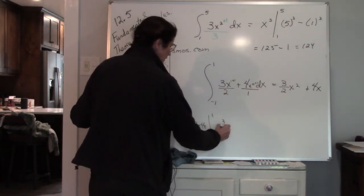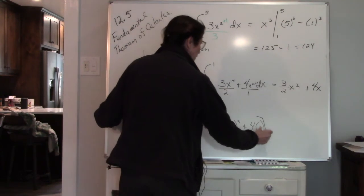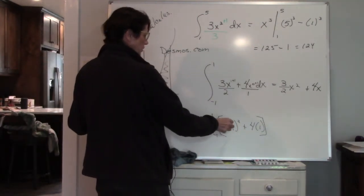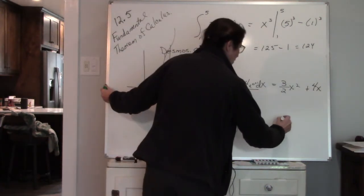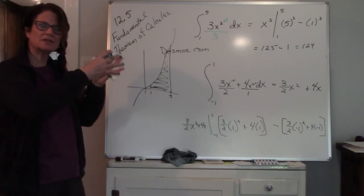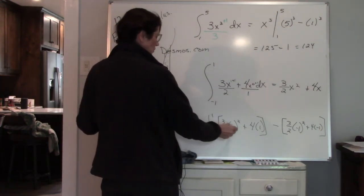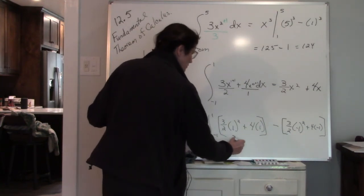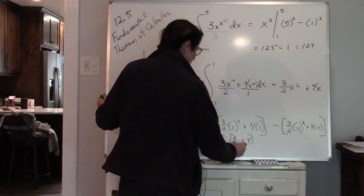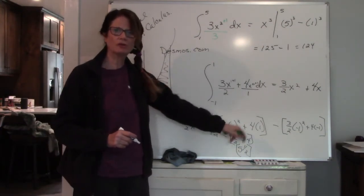So I'm going to plug in my higher number first. This is where it can get tricky — remember order of operations. You're subtracting off the whole thing, so what I do is I put brackets around each part. This is when I'm evaluating at 1, and then I'm subtracting off when I evaluate at negative 1. So I'm going to get a value in this first set of brackets: 3 halves times 1 squared — 1 squared is 1, 3 halves times 1 is 3 halves, 4 times 1 is 4. So inside my first bracket: 4 plus 3 halves is 5 and a half, since 3 halves is 1 and a half.